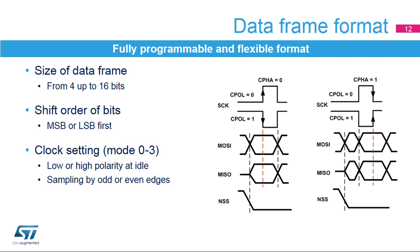There are a few controls used to set up the data format. Users can define the data frame size and the transmit order of the shift register. The clock can be set to one of four basic configurations defined in the Motorola SPI specifications. The combination of two bits controls the polarity and phase of the clock signal. When the phase control bit is cleared, data bits are sampled on the odd clock edges, and the even clock edges synchronize the shifting of the next bit onto the data line. This is the opposite when the phase control bit is set. The clock polarity bit defines the idle state of the clock signal and which clock edge is used for data sampling or shifting.